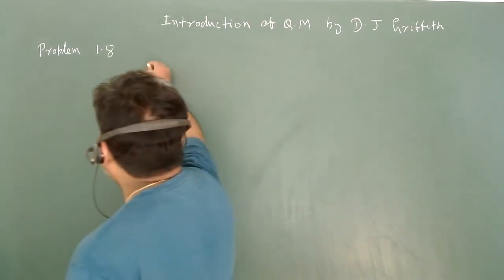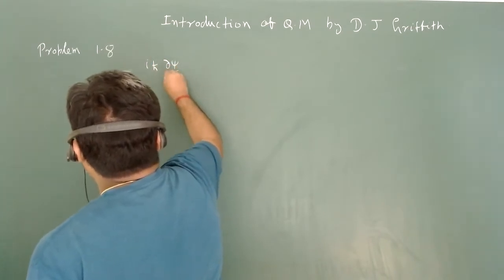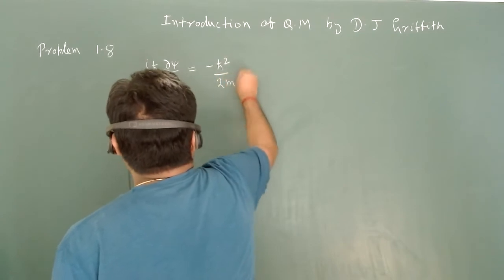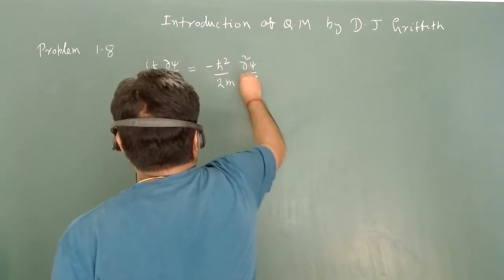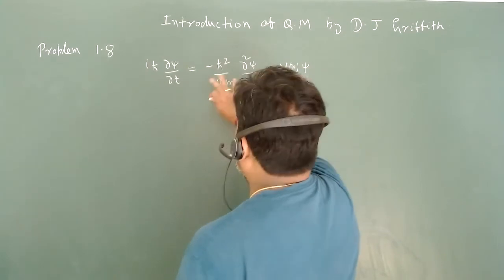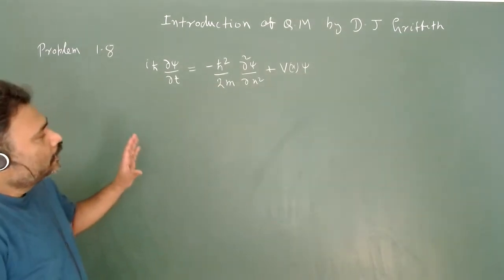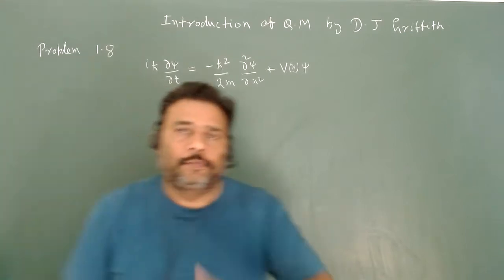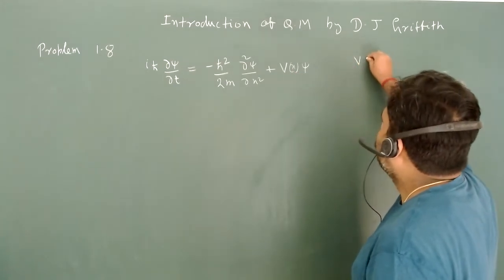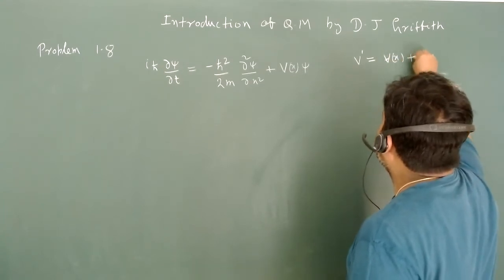The Schrödinger wave equation is: iℏ ∂ψ/∂t = −(ℏ²/2m) ∂²ψ/∂x² + V(x)ψ. Now, suppose we are going to add some constant potential to this particular potential. The new potential V' is nothing but V(x) + V₀.